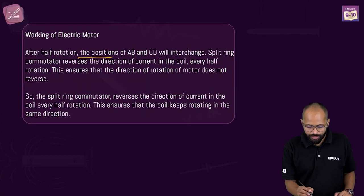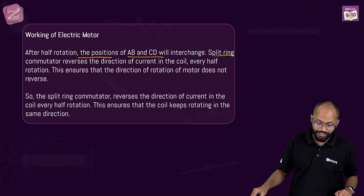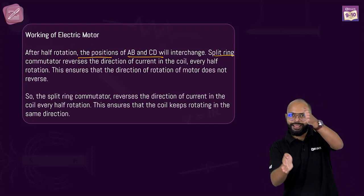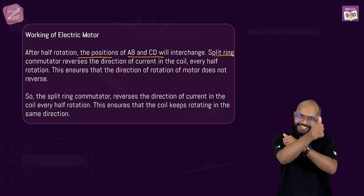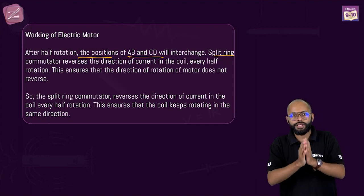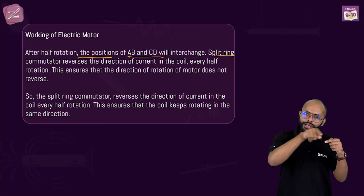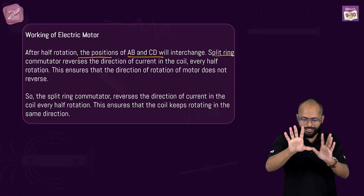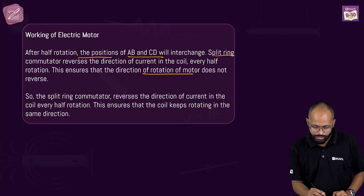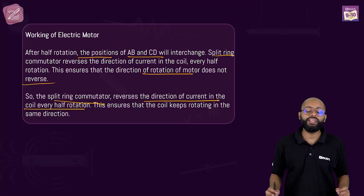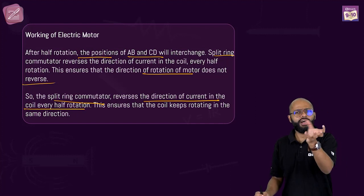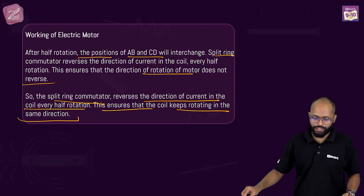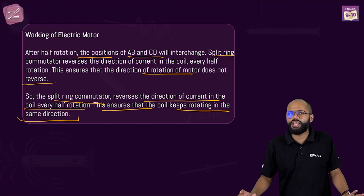After half rotation, positions of AB and CD interchange. The split ring commutator reverses the direction of current — AB was here, CD was there; after half rotation they swap, but you want force to still go up. The commutator ensures current always flows in the same direction on each side, so the direction of rotation does not reverse. The split ring commutator reverses the direction of current in the coil every half rotation — this ensures the coil keeps rotating in the same direction.